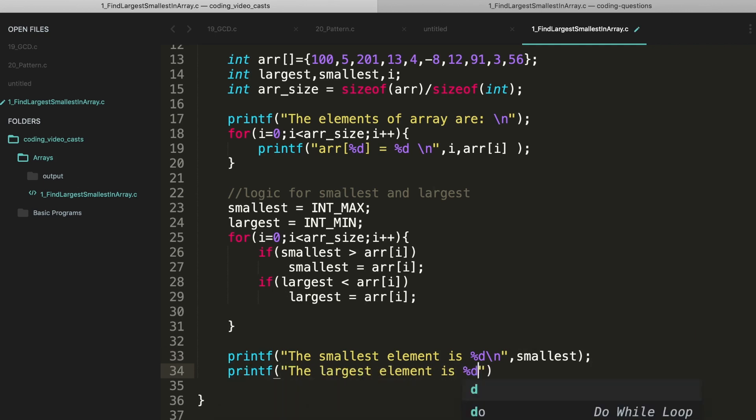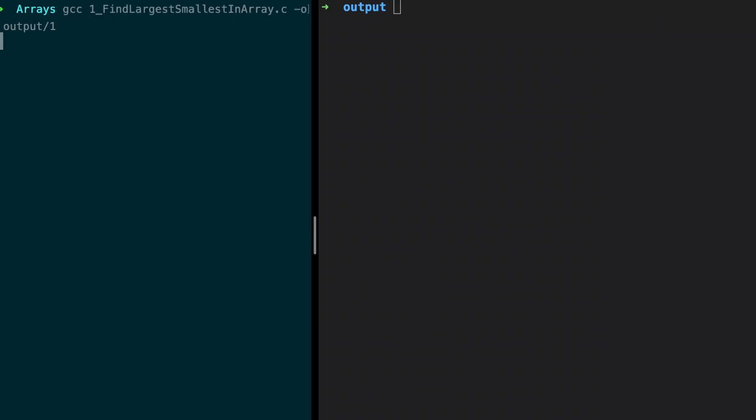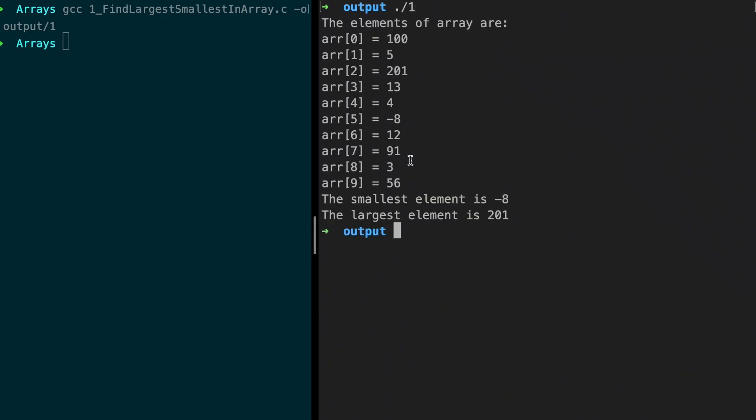After the loop, let's print it. Printf - the smallest element is smallest. Printf - the largest element is largest. Let's compile and check this. Okay, no compilation errors. Yeah, the smallest element is -8, which is right, and the largest element is 201. Absolutely working.